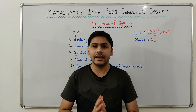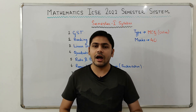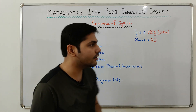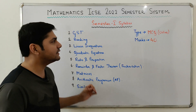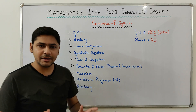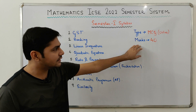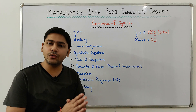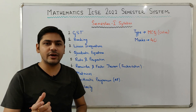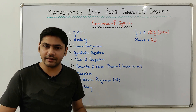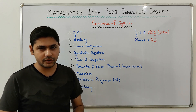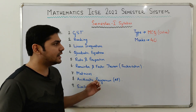Let's begin with the semester-wise syllabus. Semester one will be of 40 marks and it will be an MCQ type exam — that means multiple choice questions. You will have a question with either four or five responses and you will have to select the correct answer.